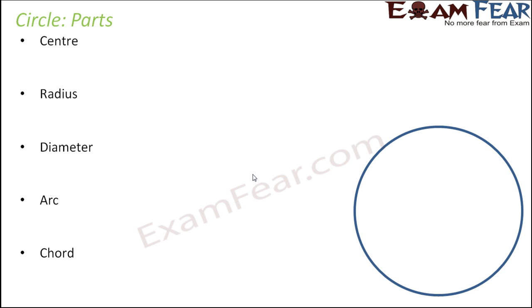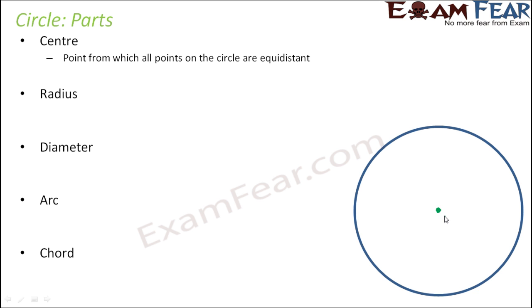In a circle we have many different parts — these may be new terms to you. First is the center. It is that point from which all points on the circle are equidistant. The center must be located inside; if placed elsewhere, not all points would be at the same distance from it. That is why the center is located at that specific inner position.